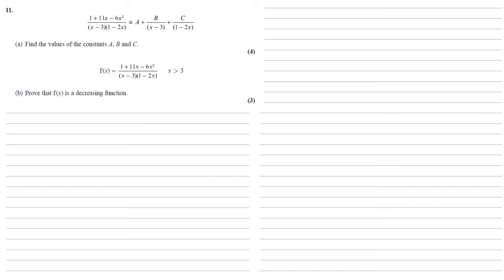So the first thing to do is take the right-hand side and we're going to multiply each of those terms top and bottom to create the same denominator. For a, we multiply top and bottom by (x - 3)(1 - 2x); for b, we multiply by (1 - 2x) top and bottom; and for the final fraction with c in it, we multiply by (x - 3) top and bottom.